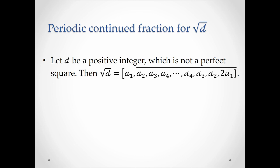Next, it is found that the square root of d has a very nice representation. When d is a positive integer and is not a perfect square, then the square root of d has a representation like this, which is a periodic continued fraction. This periodicity of the square root of d is a very important element for solving the quadratic Pell's equation.